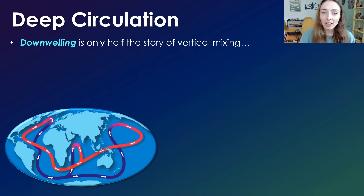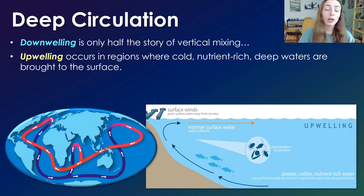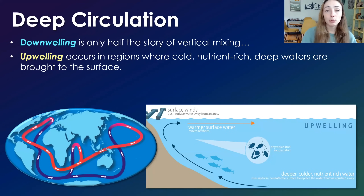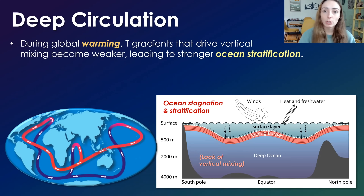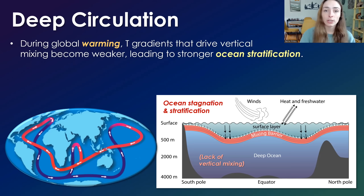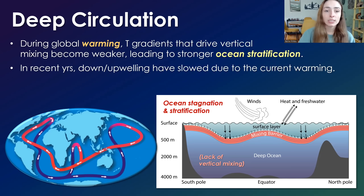But downwelling is only half of the story regarding the ocean's vertical mixing. Upwelling can also occur, driven by surface winds along the coasts, and it allows cold, nutrient-rich deep waters to be brought to the surface, fueling primary productivity or algal blooms. During periods of global warming, the temperature gradients from equator to poles that drive vertical mixing become weaker, leading to stronger ocean stratification — similar to what I mentioned in the Cretaceous. We've seen a similar trend in recent years where downwelling and upwelling have slowed due to the current warming trend.